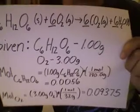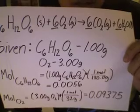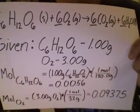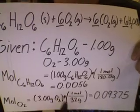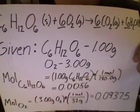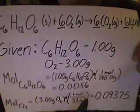The first step to calculating the limiting reactant is to make sure all amounts are in moles. To figure out the molar mass of glucose, take the given amount and multiply it by the molar mass, and you get 0.0056.